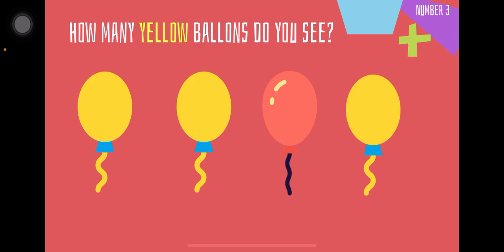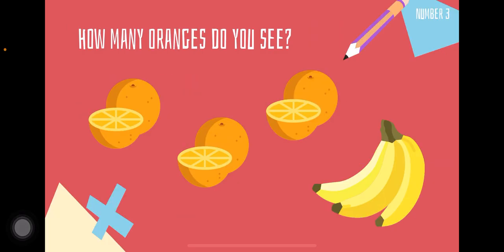Let's have another example. Look at those balloons. There are yellow ones and a red one. How many yellow balloons do you see? Let's count the yellow ones: one, two, no, three. Very good!